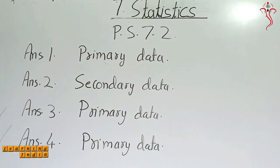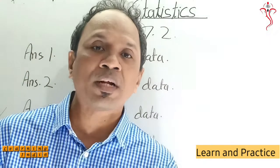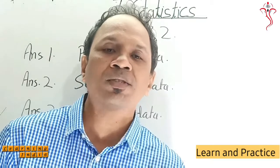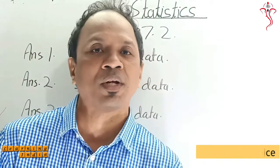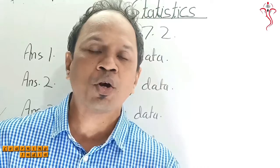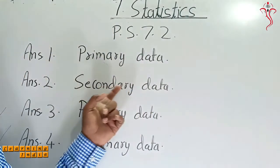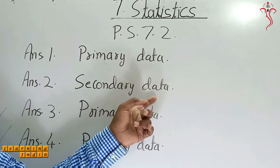For question two, the information about the height of students was gathered from the school record and has to be sent to the head office. Here, you are taking help from the school record which already has the heights of every student. Since you are not doing the work yourself but relying on someone else's data, that becomes your secondary data.